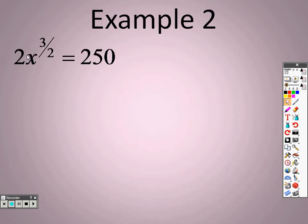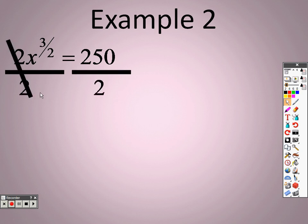Example 2. I can't do anything with this problem until I get the x all by itself. So I need to get rid of that 2. And since this is 2 times x, I'm going to divide both sides by 2. And when I do that, I get x to the 3 halves equals 250 over 2. So, when I divide them, I end up getting 125 on this side and I have x to the 3 halves.